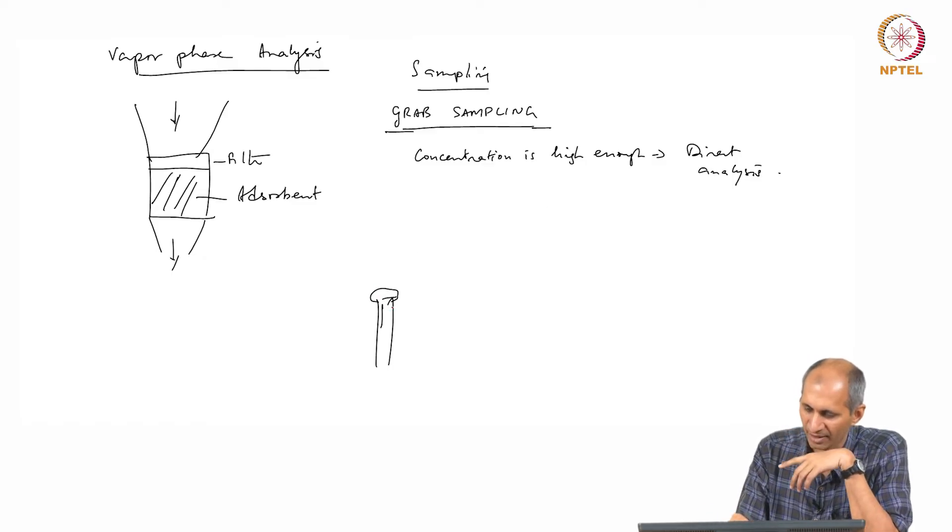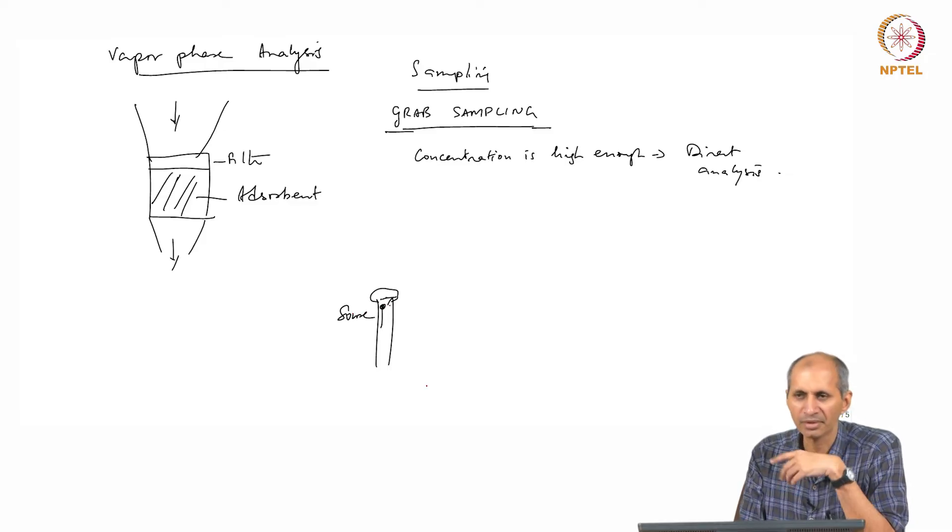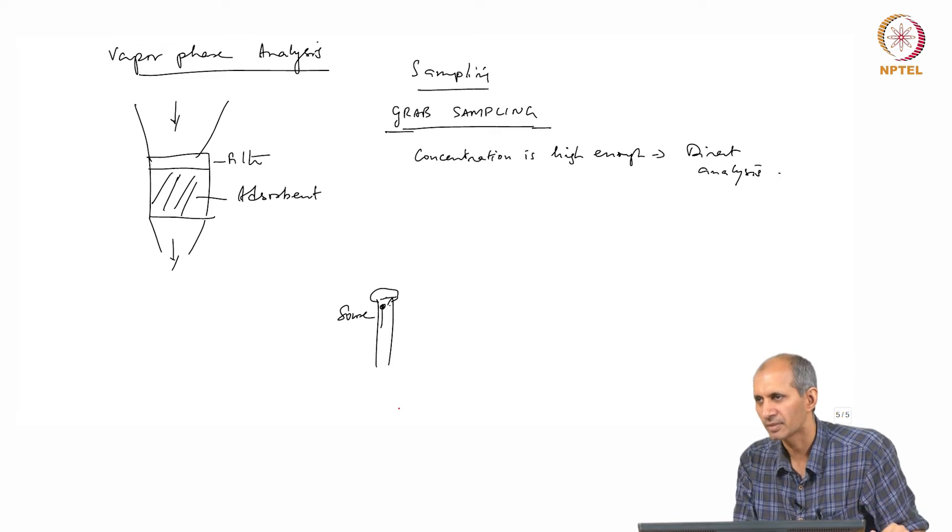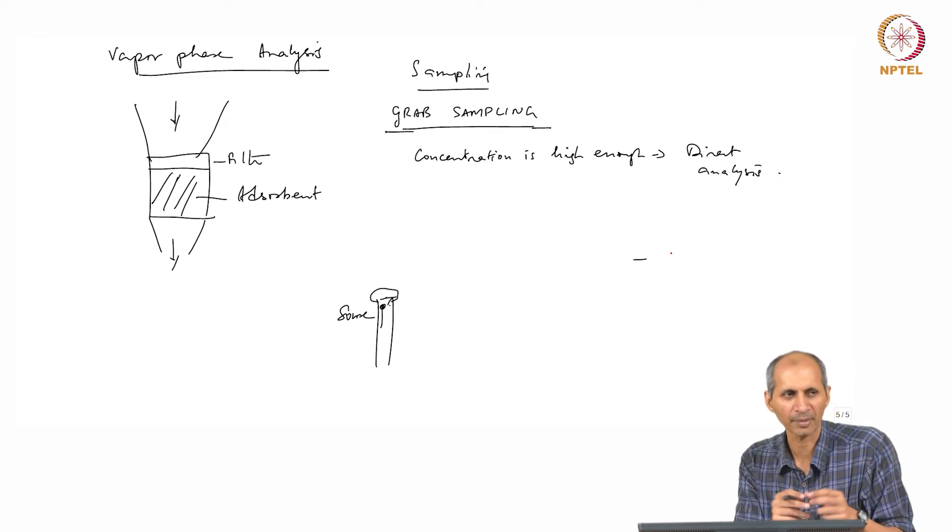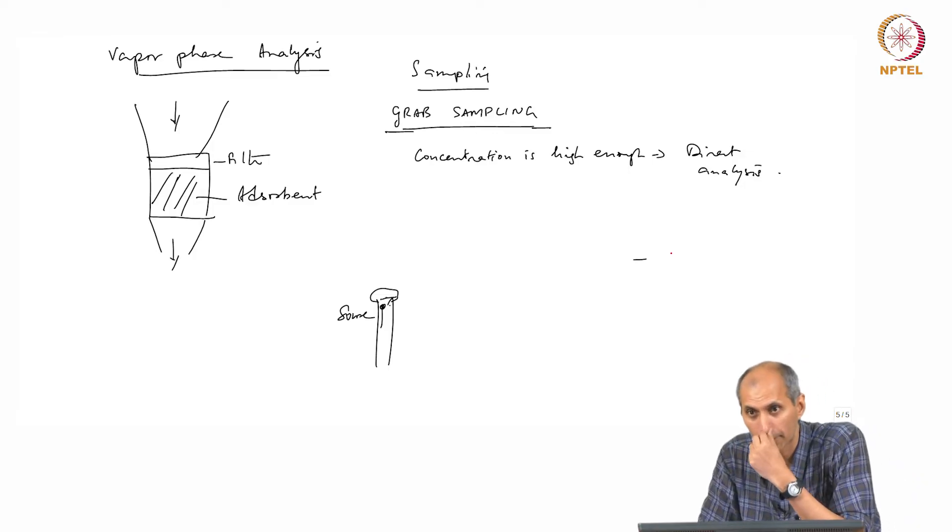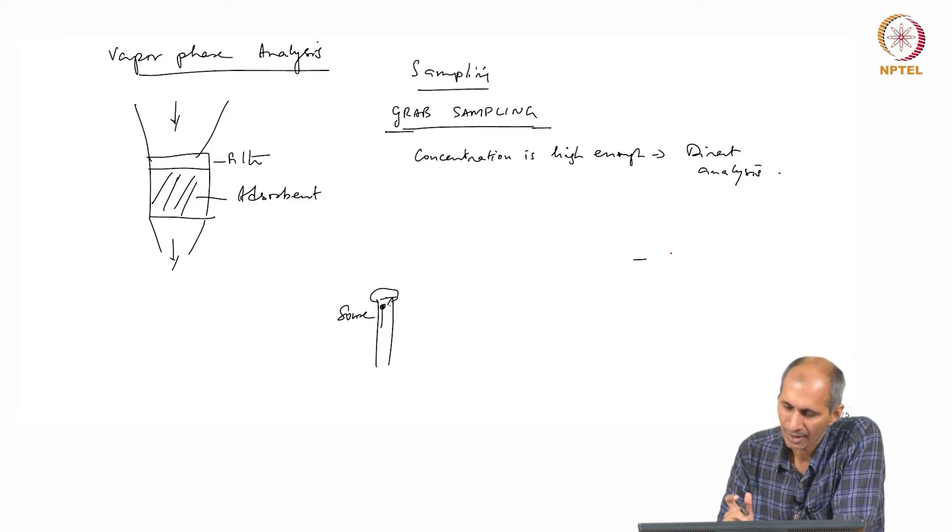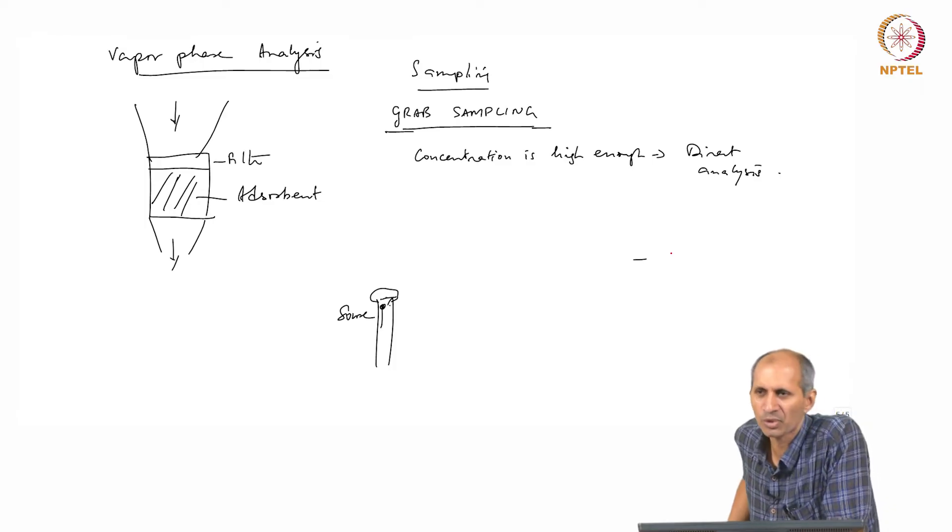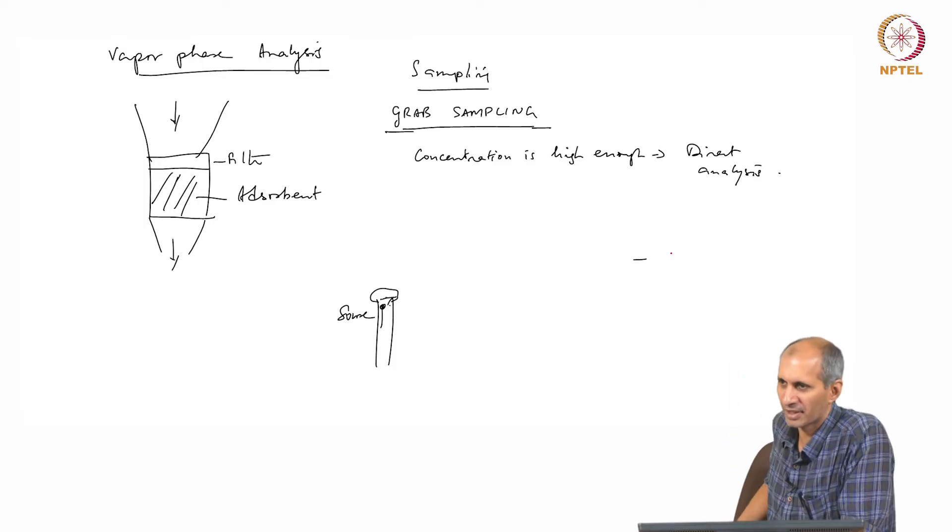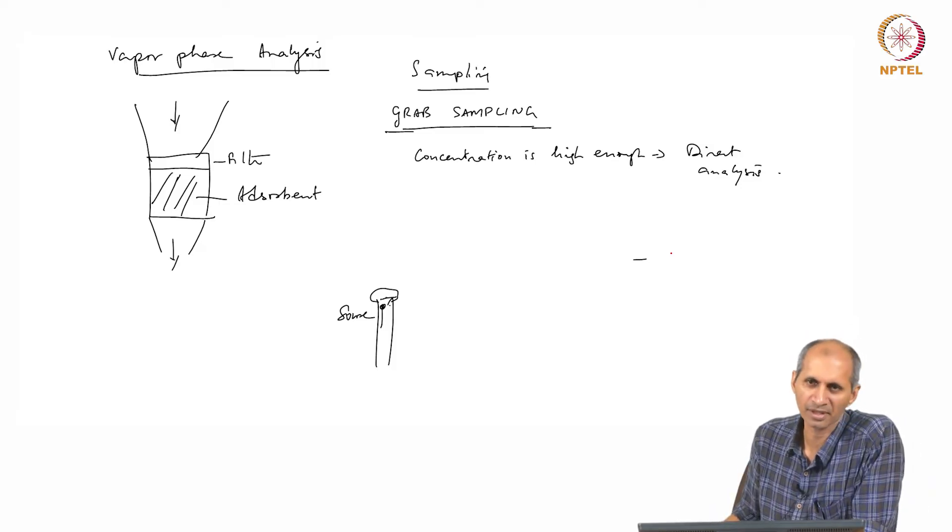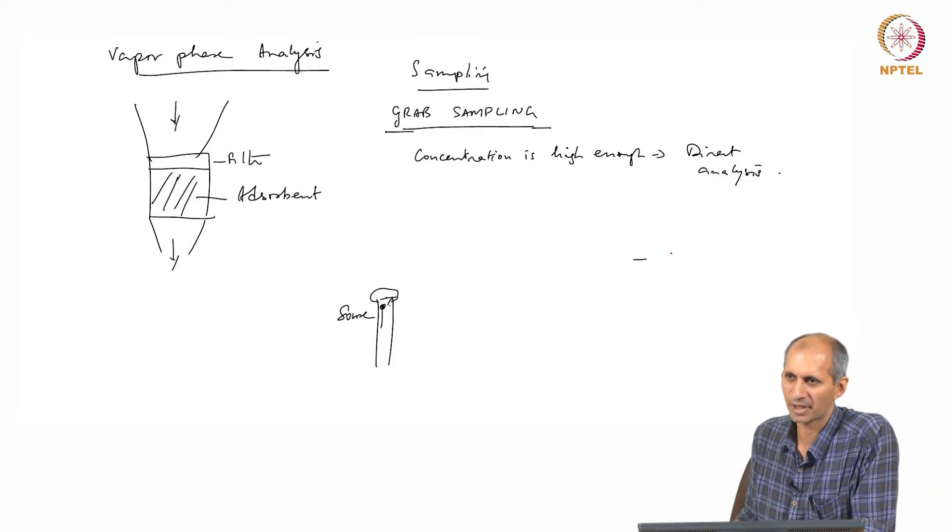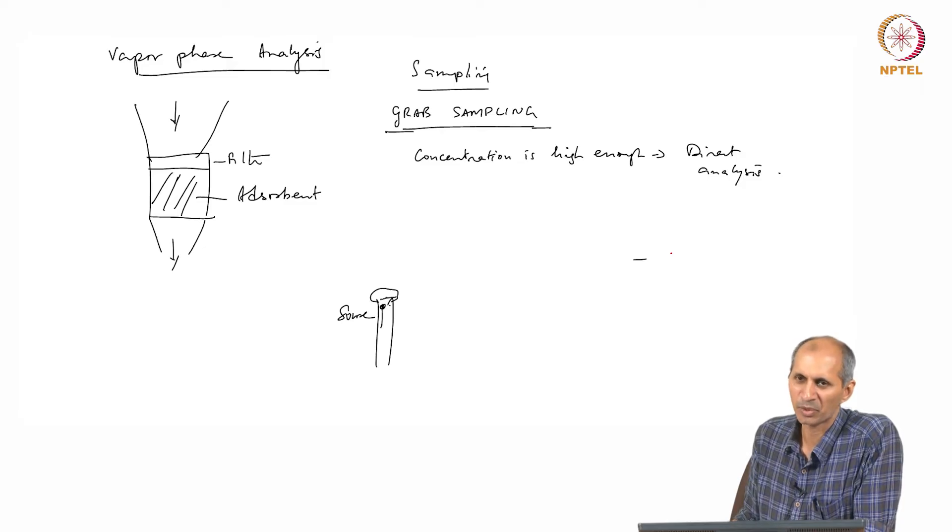If your emission source is here, this is a source. Right here, if you want to measure, I can use grab sampling, it may work. But if I am somewhere far away, I'm standing in the middle of the road and I'm trying to do grab sampling, chances are it may not work. This is a question of source sampling versus ambient sampling. Ambient sampling is general atmosphere. Grab sampling may not work.